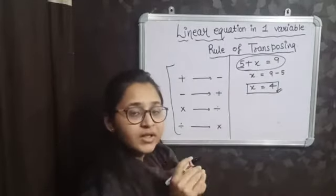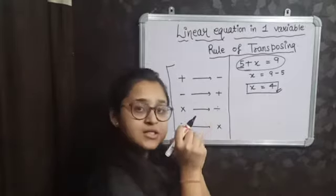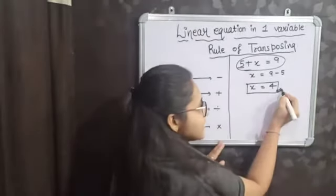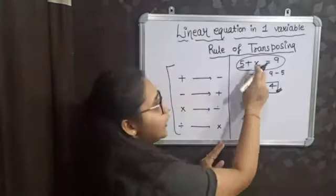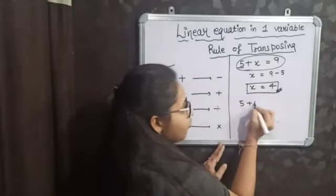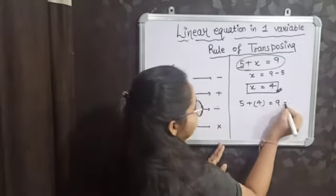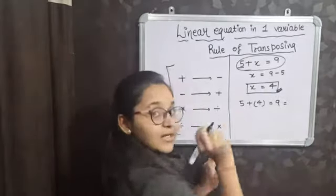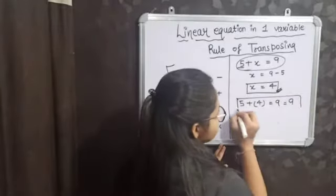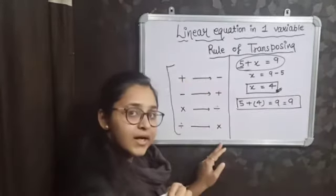We can check whether the solution we found is correct or not. You will put x equal to 4 in your original equation: 5 plus x equals 9. So 5 plus 4 is 9, and 9 is your right-hand side. It means your equation is verified — the solution is verified, so your solution is correct.